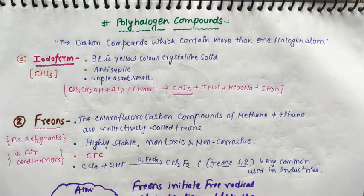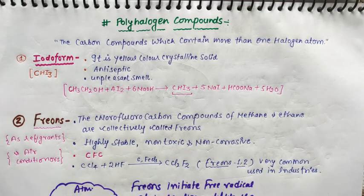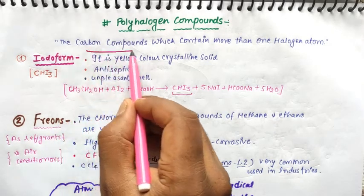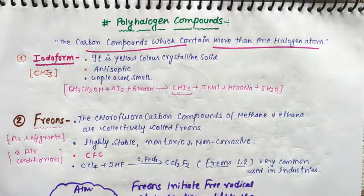Basically, as its name indicates, polyhalogen means compounds which contain more than one halogen atom. Such compounds are known as polyhalogen compounds - carbon compounds which contain more than one halogen atom.